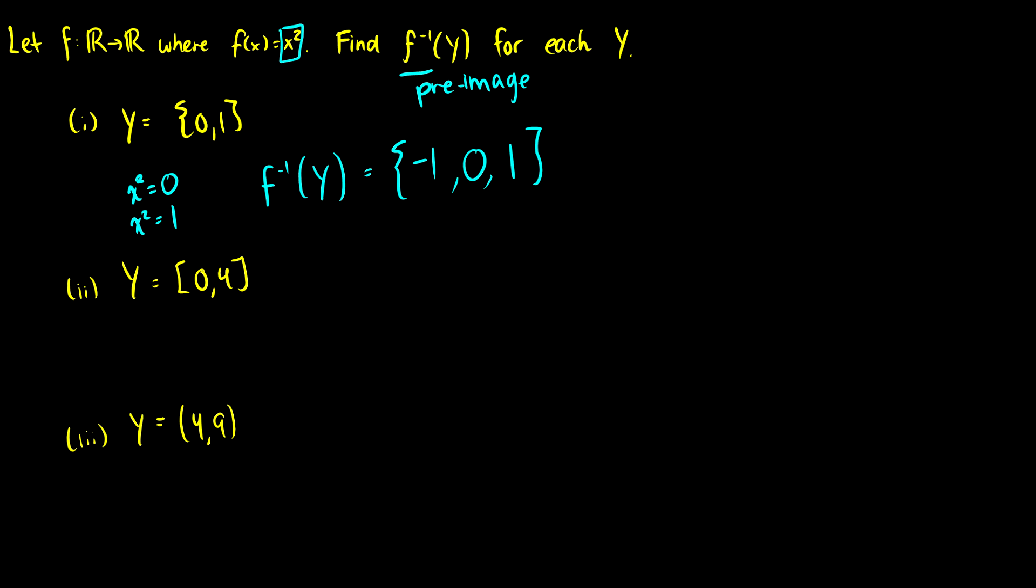So what about the interval? So in this case, we want x² to be between 0 and 4. So well, this is just like taking the square root of both sides.